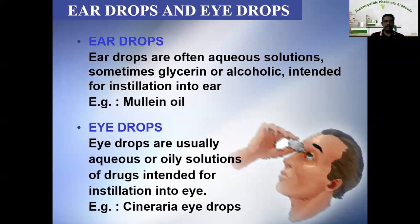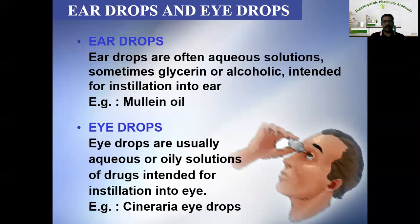Eardrops are usually aqueous solutions, sometimes with glycerin or alcohol, intended for instillation into the ear. An example is mullein oil — despite its name, it does not contain any oil; it is the glycerin extract of Verbascum leaves, prepared by mixing Verbascum leaves with glycerin. Eye drops are usually aqueous or oily solutions of drug intended for instillation into the eye. Examples include Cineraria eye drops and Euphrasia eye drops.